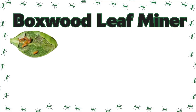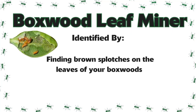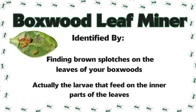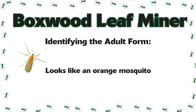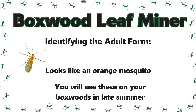The fourth on our list that we'll be talking about today is boxwood leaf miner. Boxwood leaf miner can be identified by finding brown splotches on the leaves of your boxwoods. It's actually the larvae that feed on the inner parts of the leaves. If you want to identify the adult form, they actually look like an orange mosquito and you will see these on your boxwoods in late summer.